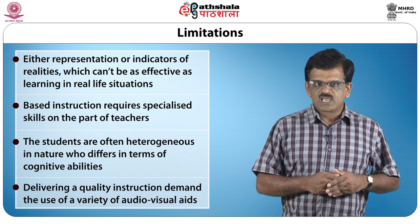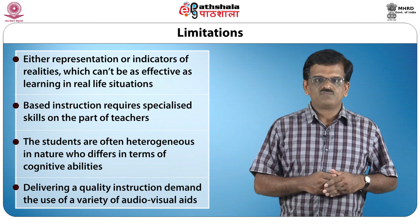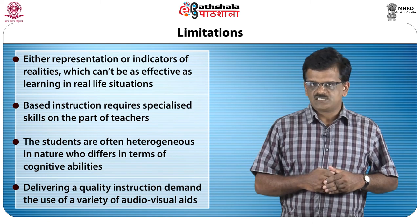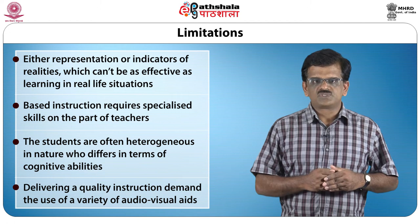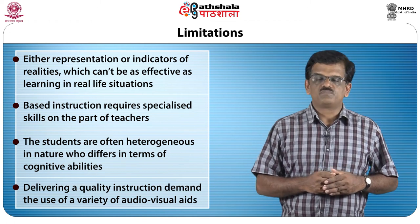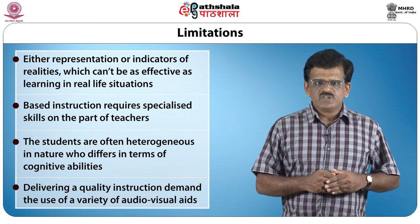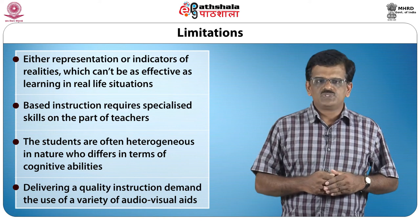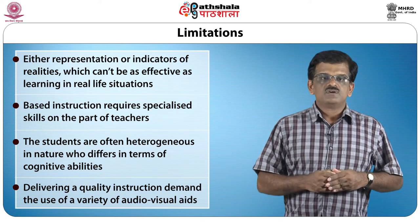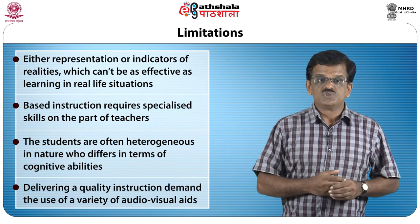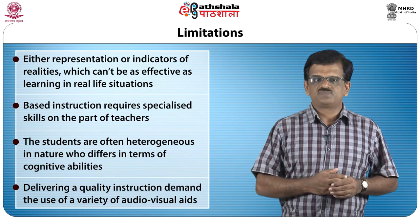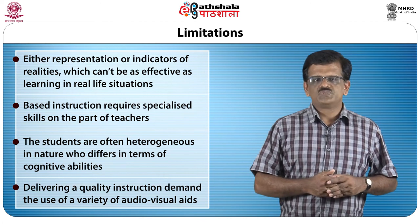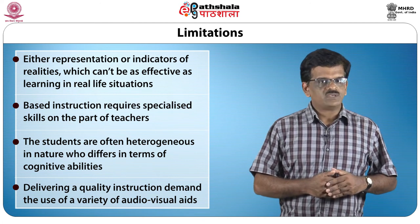For example, Kolb's learning style model identified four learning styles — visual, auditory, tactile and kinesthetic. An effective audio-visual aid should cater to all learners' needs uniformly. Delivering quality instruction demands use of a variety of audio-visual aids. Developing the audio-visual infrastructure is very expensive, and organizations are always struggling to get adequate funds. A small extension office at block level cannot develop quality audio-visual teaching materials without adequate funding from the state office.